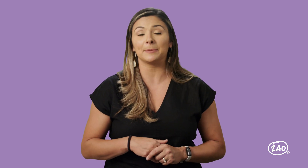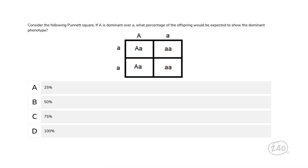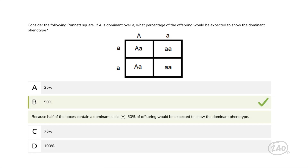Let's move on to life science, specifically genetics. Consider the following Punnett square. If capital A is dominant over lowercase a, what percentage of the offspring would be expected to show the dominant phenotype? Any organism that contains a dominant gene will show the dominant trait. Two of the four boxes contain a dominant gene, so 50% of offspring would be expected to show the dominant phenotype.